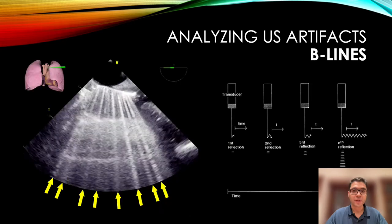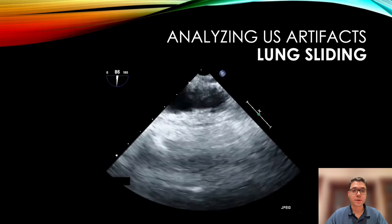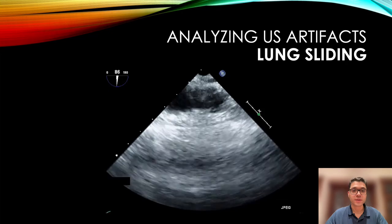The second lung artifact that we need to recognize are the B-lines. These are abnormal, shiny, vertical lines arising from the pleura. They move along through the respiratory cycle and erase other artifacts. They also do not fade. They may appear in processes associated with increased lung parenchyma density such as pulmonary edema, interstitial diseases, and atelectasis.